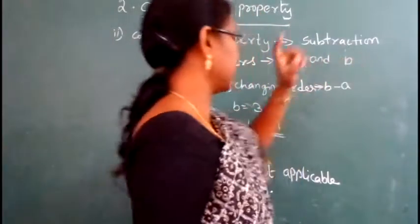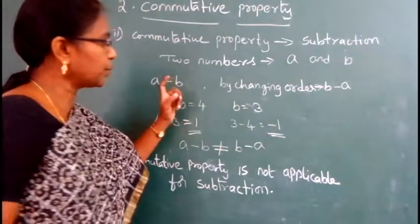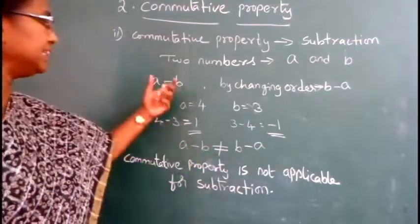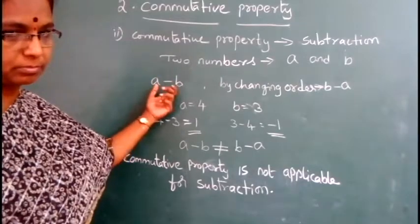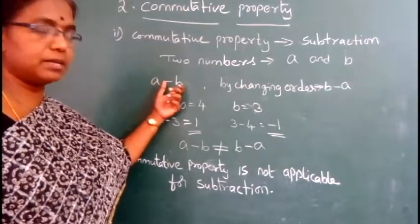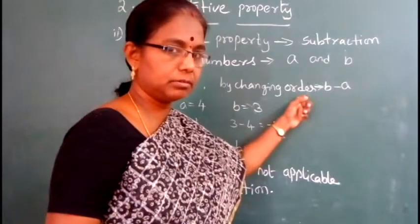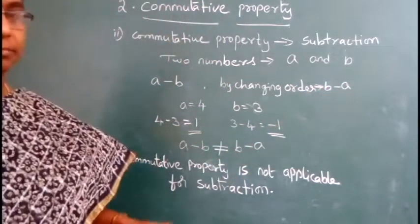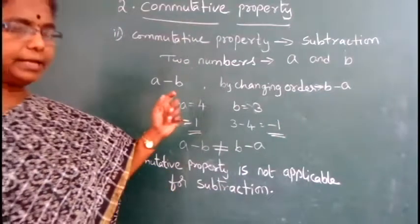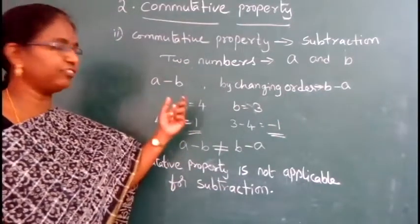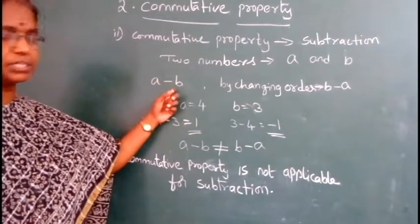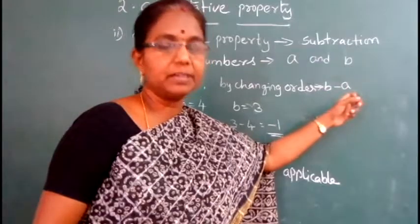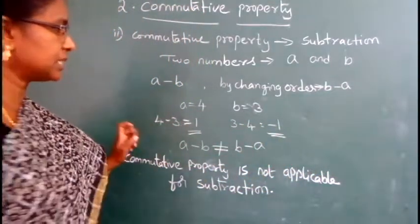Property on subtraction. In this property, if you take any two numbers, their subtraction a minus b and by changing the order to b minus a will not be equal. Any two numbers, if you do the difference, subtract a minus b, but changing the order, b minus a will not be equal. That means suppose,